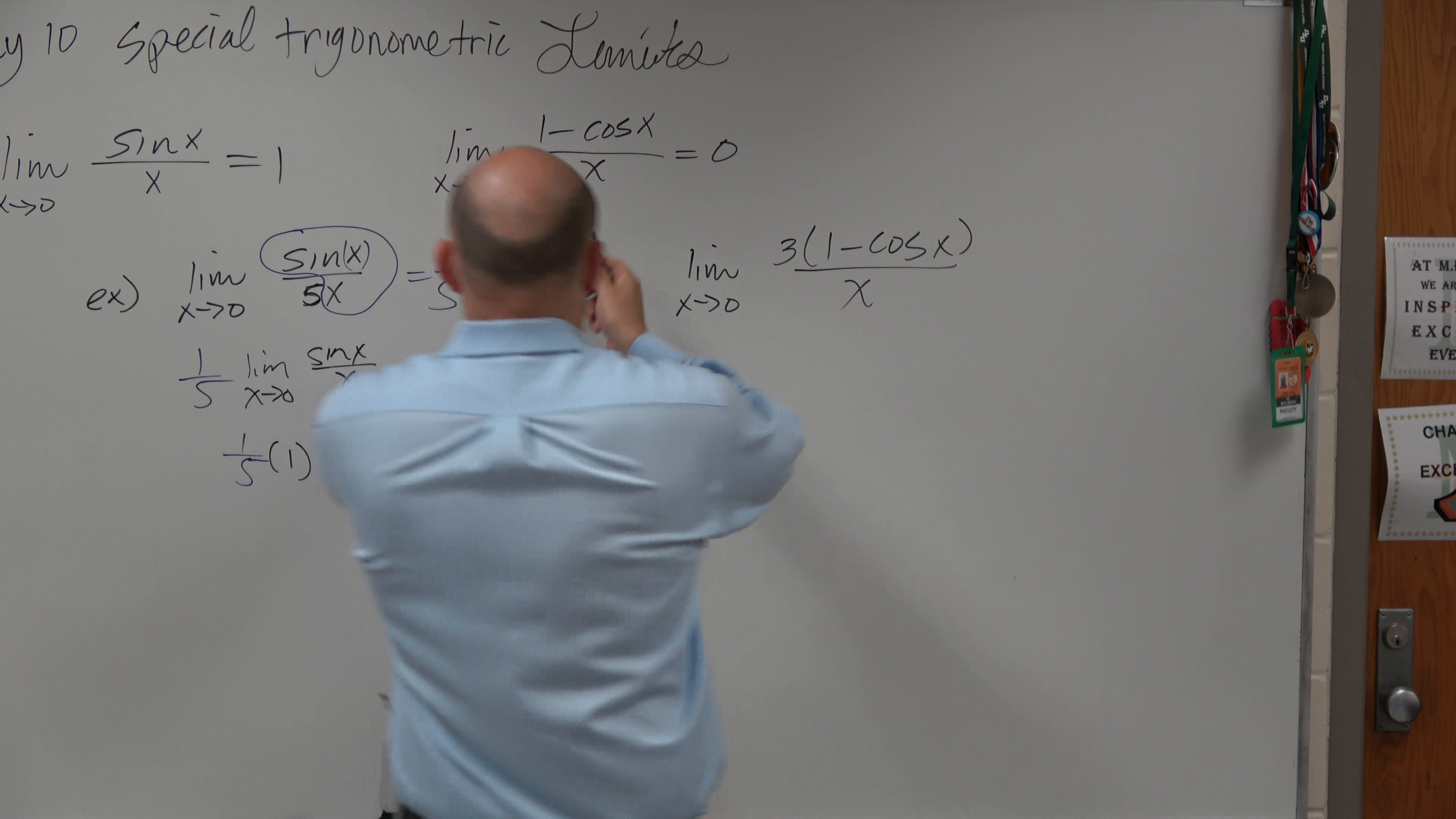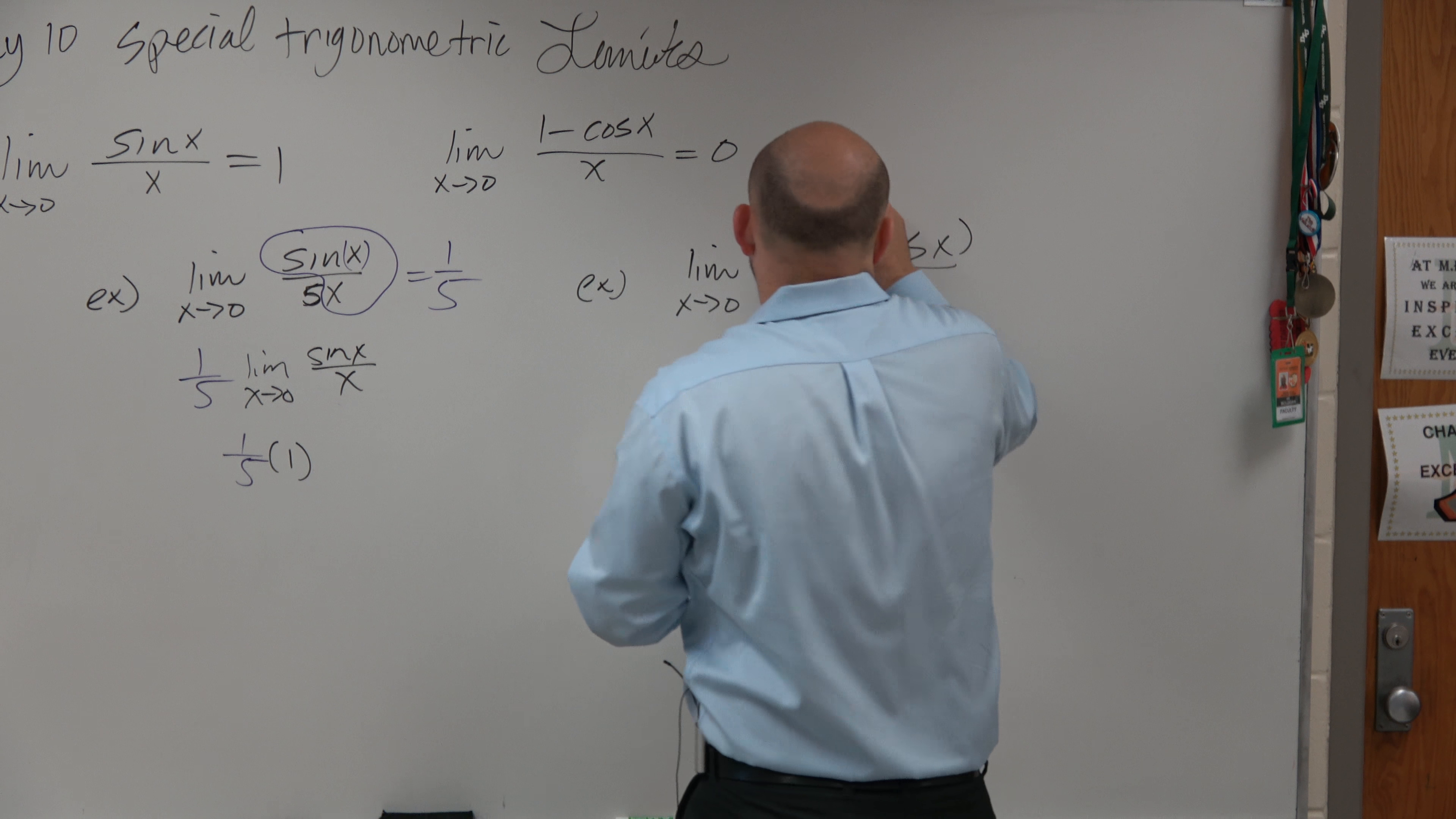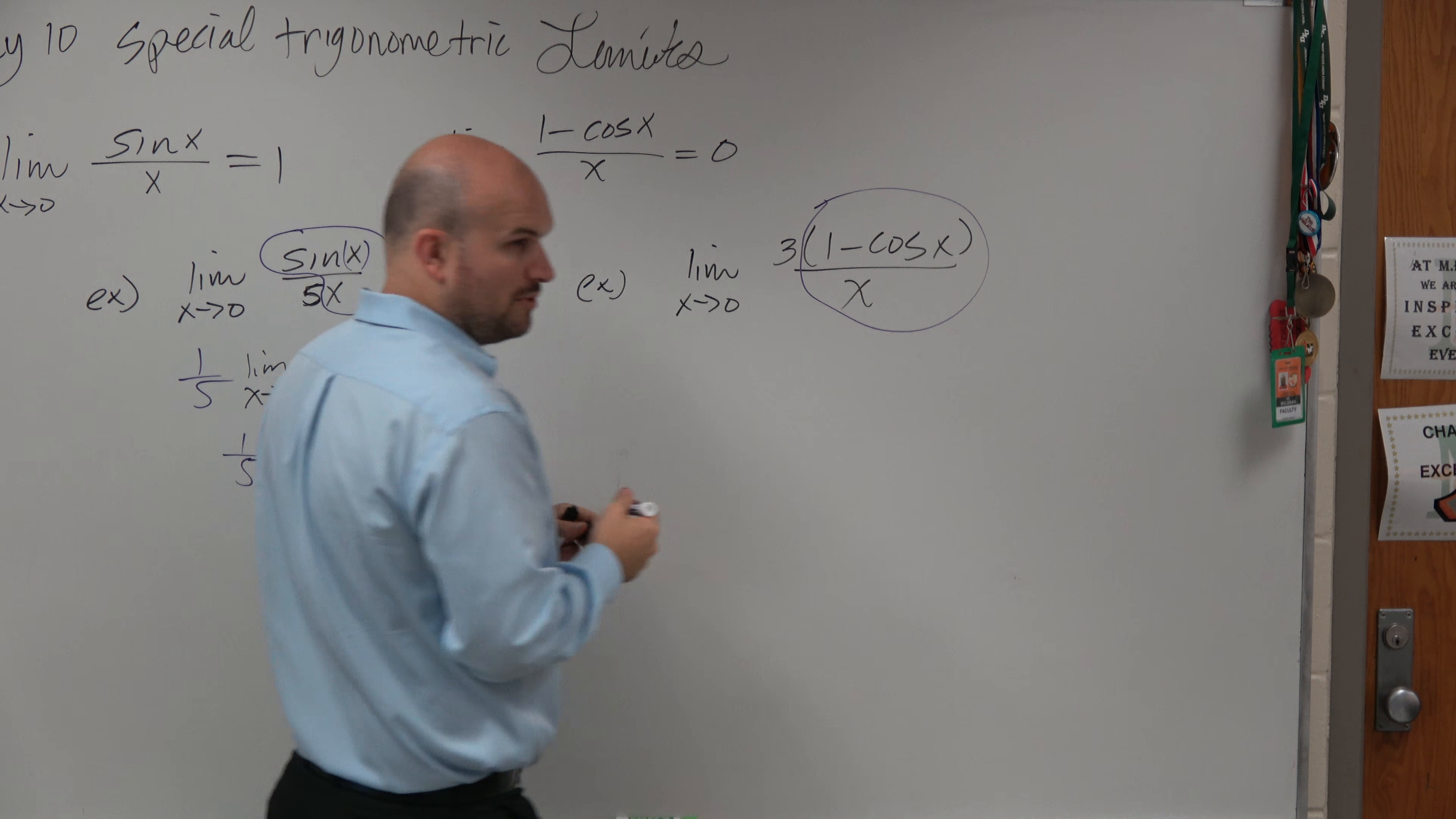But again, we know that if we can take 1 minus cosine of x divided by x, we know that's equal to 0. So that's what we want to take.